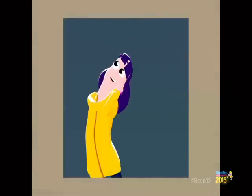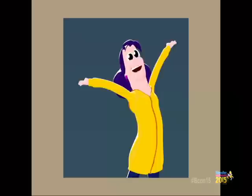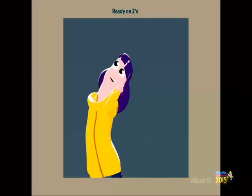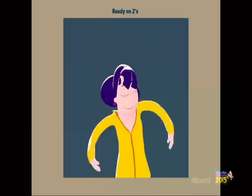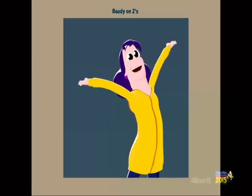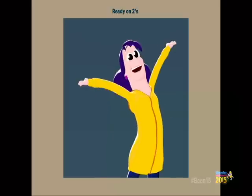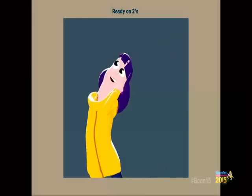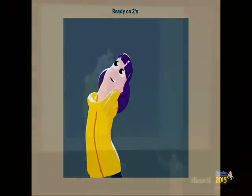Then maybe do some overshoot — she comes into that extreme pose, shoots over it a little, then comes back into it. And maybe in the beginning she has a little breath and then goes into it, so there's a slight anticipation. This is the version I was happy with — on twos. Twos comes from the old Disney lingo: you have 24 frames per second, but if you animate every other frame, it's still functional because your brain makes up for those missing frames. It feels snappy. Whenever you need fast motion, you animate on ones.